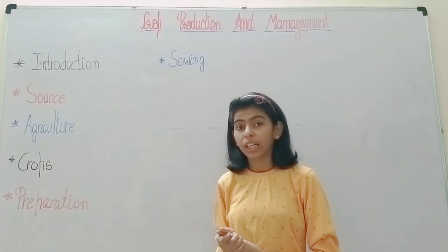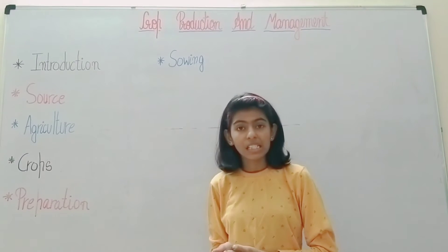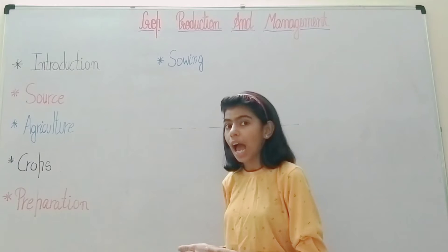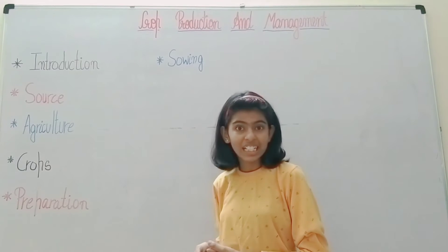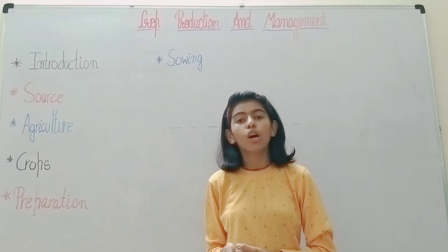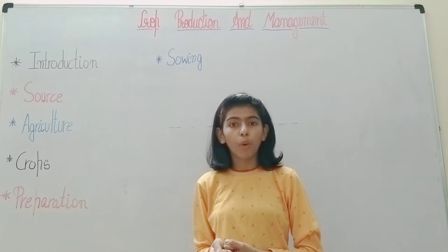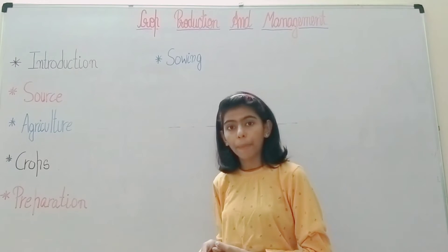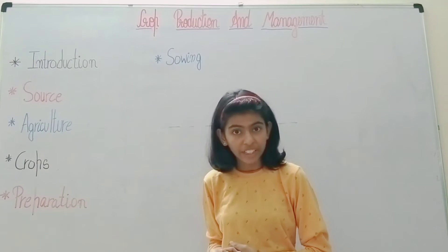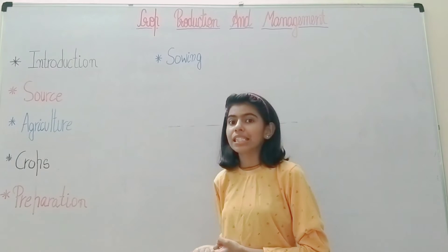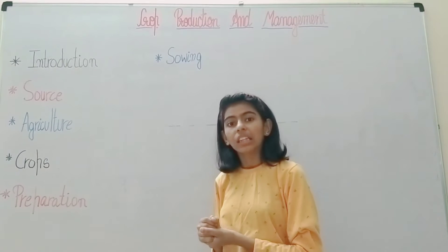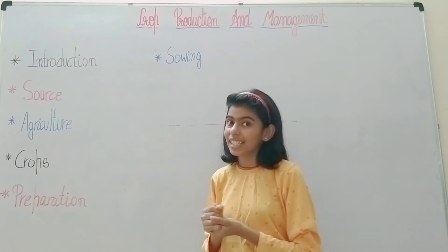Edible seeds include cereals, pulses, oil seeds, and nuts. Cereals are sources of carbohydrates. They include crops like wheat, barley, maize, and many crops that give us carbohydrates.